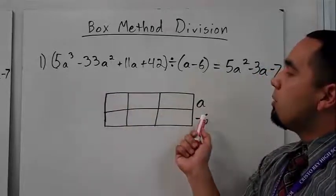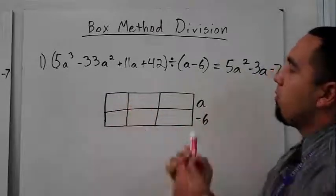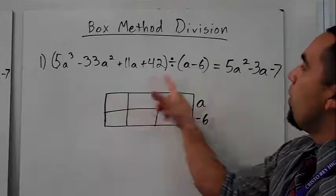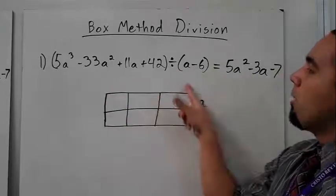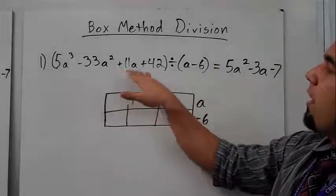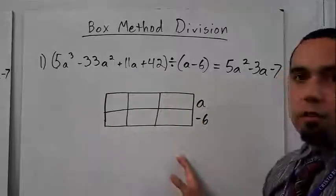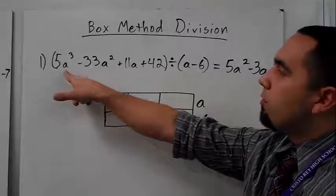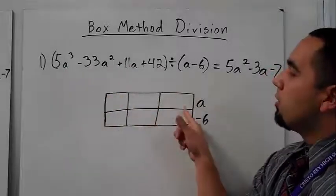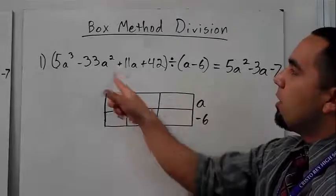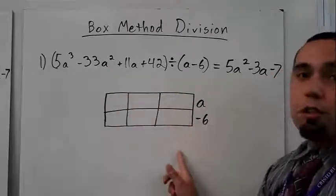So the way I use the box method is usually I use the box to multiply. And if I were to do it the normal way, this number would be up here, and I would find this in my answer, right? Because this number would be my first box. These added together would give me my middle terms, and my last term would go right there.